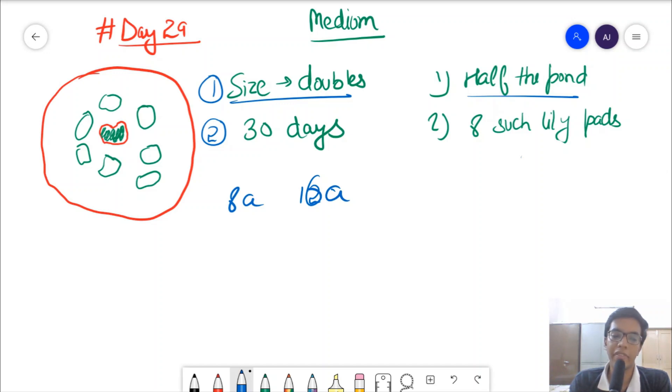So instead of saying on day 1 we have 8a, if we had started from a, when would we reach 8a? a, 2a, 4a, 8a. So instead of saying we have 8 lily pads in the beginning, I could have said you have a lily pad which starts at 8a. You have to tell me when it reaches full size, so it's 30 minus how much? This is 3 days gap, so 30 minus 3 equals 27. Simple.